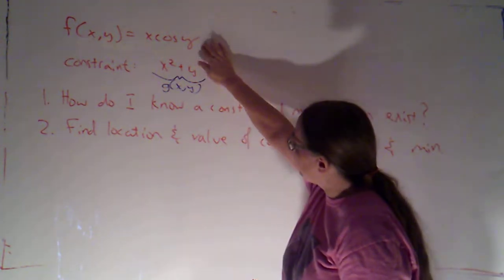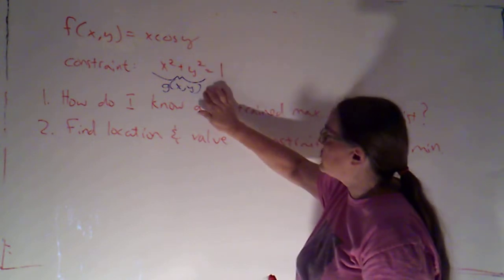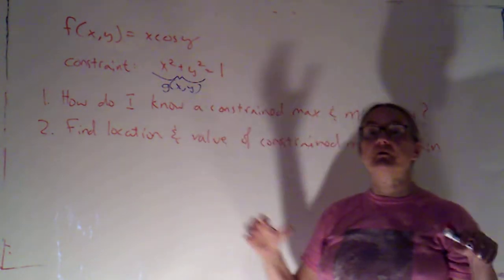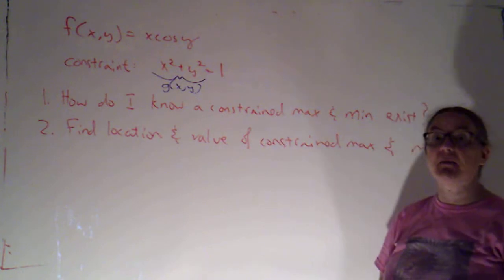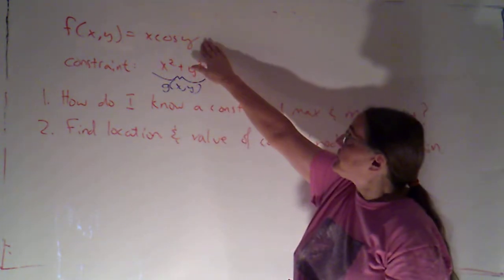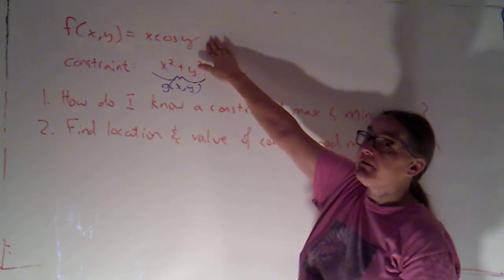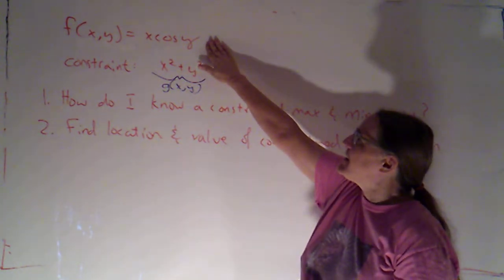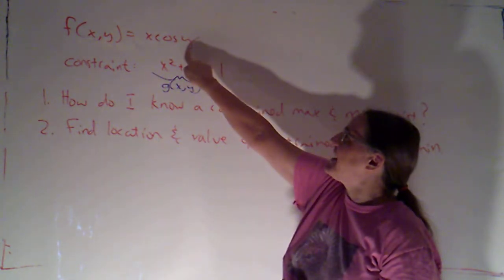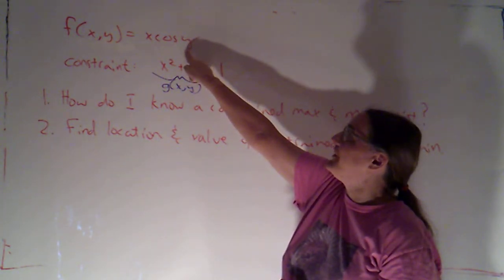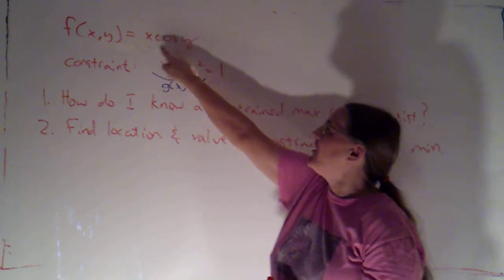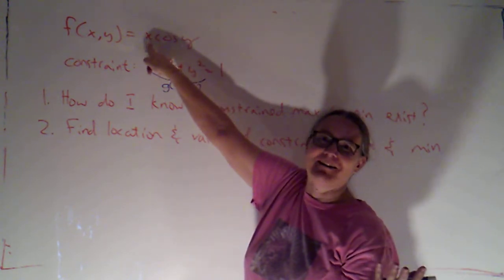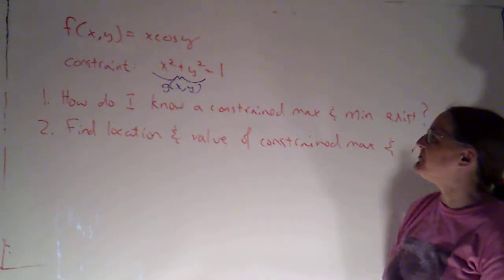This function has two variables, and the constraint function has two variables, so the constraint is going to serve to restrict my domain. This would not have a max and min if I didn't restrict the domain, because I could set y to be something like zero so that cosine of y was one, and then let x be as big or as small as I wanted. So there would be no max or min.